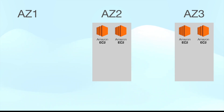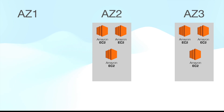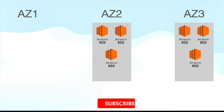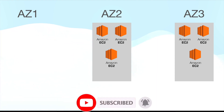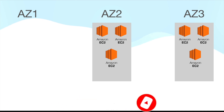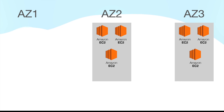You might say: even if AZ1 is down, I have AZ2 and AZ3 — I can stand up more instances there. You can create EC2 instances using auto scaling, and that serves the purpose. But mind you, creating an EC2 instance takes time — it is a control plane activity involving complex workflows and dependent tasks, so chances of failure are higher. On top of that, it is a slow process.